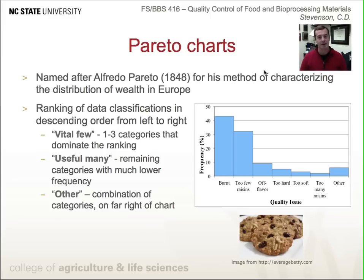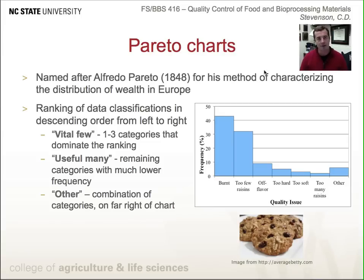You might think of the elite 1% that's talked about in the U.S. How would you characterize the elite 1% as compared to the rest of the population? So here we can start with an example in foods — think about oatmeal cookies. The way this works is you rank data classifications in descending order from left to right. The classifications in this case are quality problems encountered in oatmeal raisin cookie production.